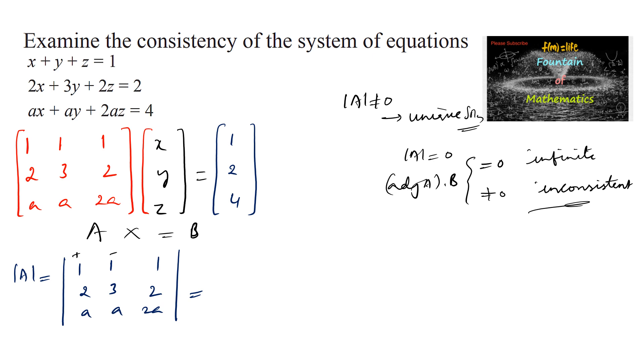The plus minus plus pattern: 1 times (3·2a - 2·a) which is (6a - 2a), minus 1 times (2·2a - 2·a) which is (4a - 2a), plus 1 times (2a - 3a).